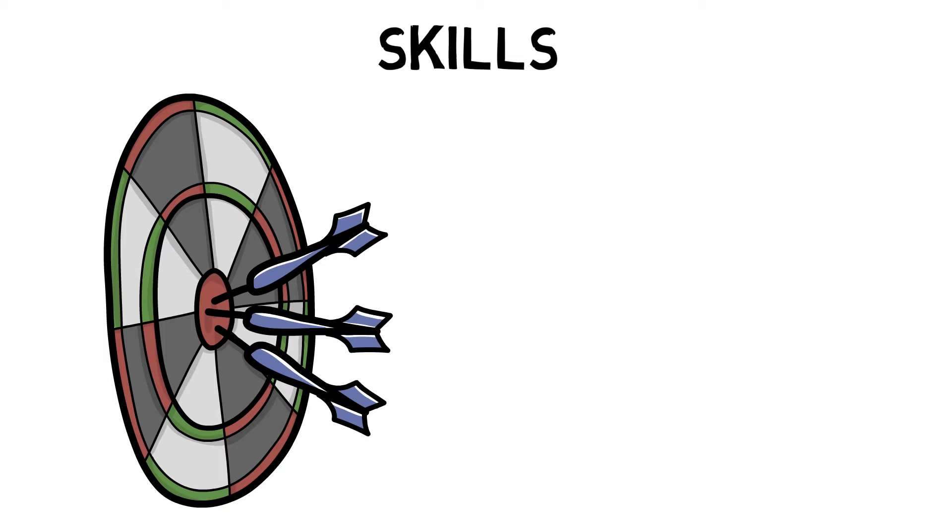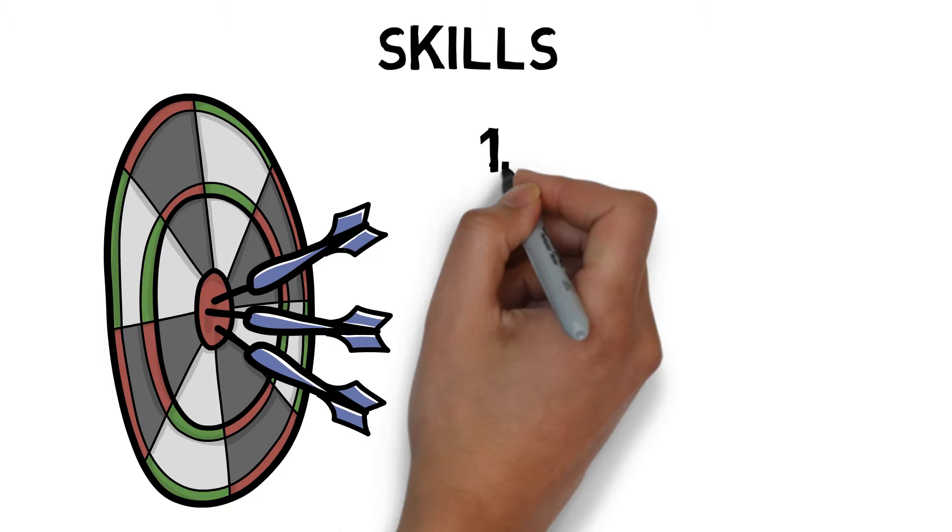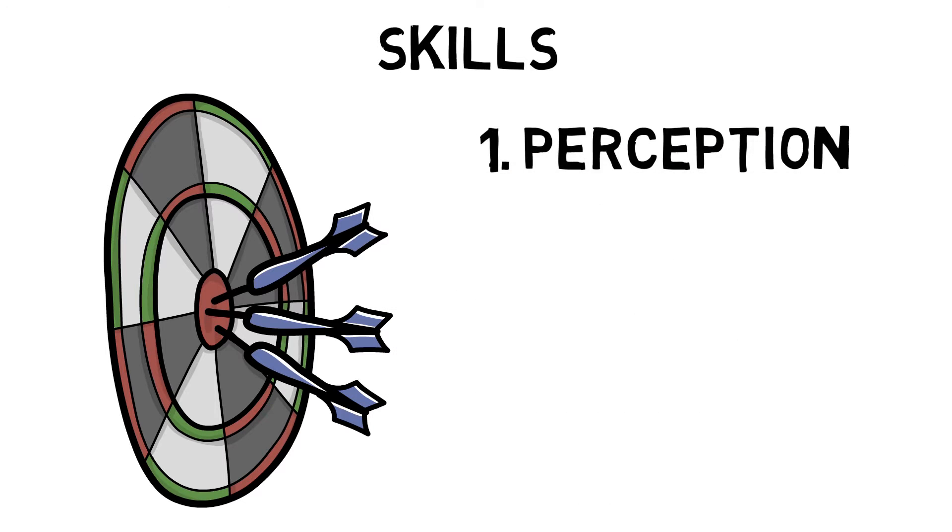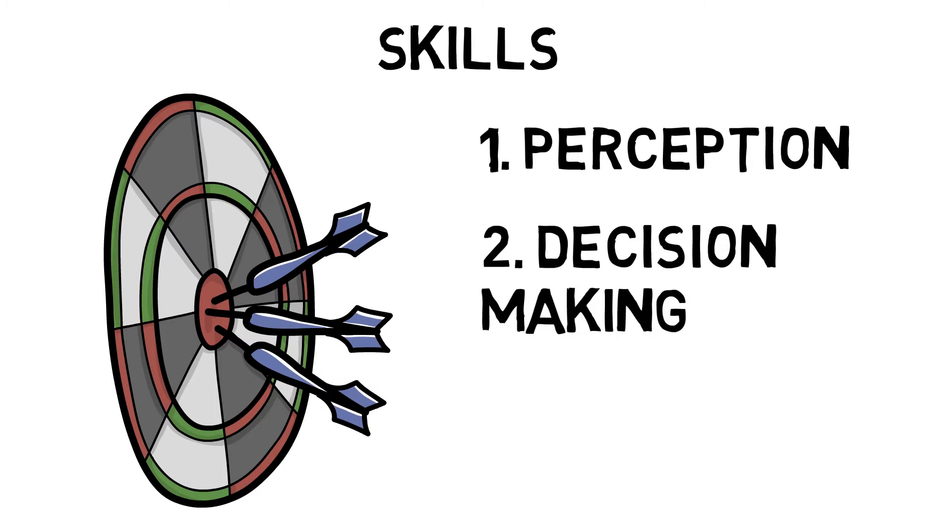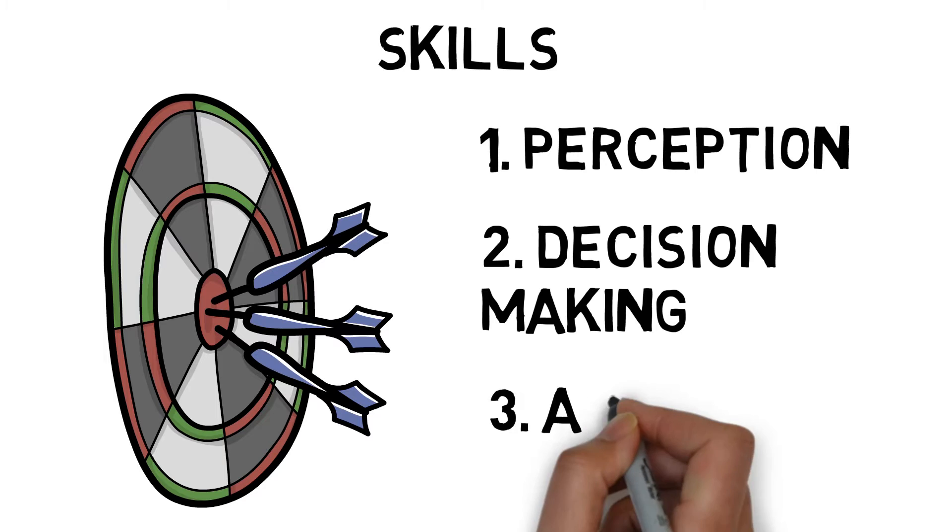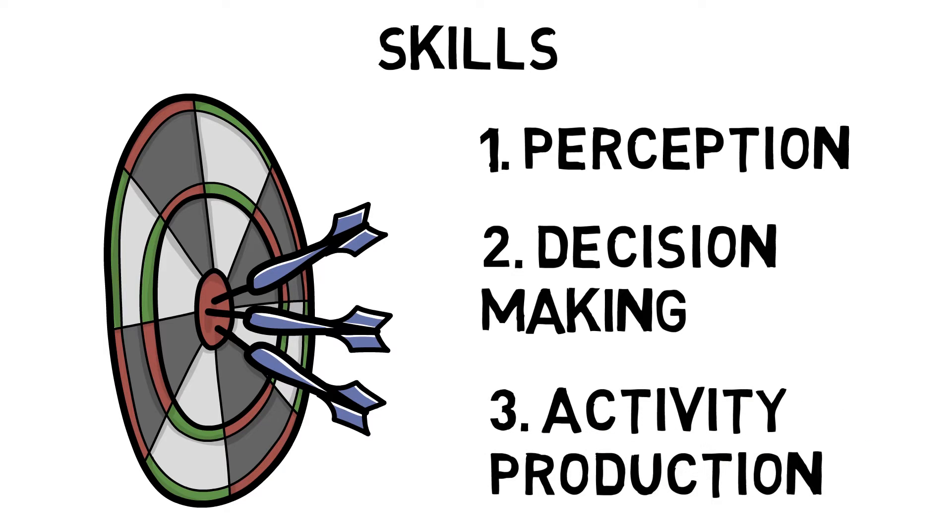There are three primary features of a skill. Perception is understanding the relevant environmental variables and situations. Decision-making is deciding what to do, when to do it, and where to do it. And activity production, which is producing organized muscular activity to generate the appropriate movement.